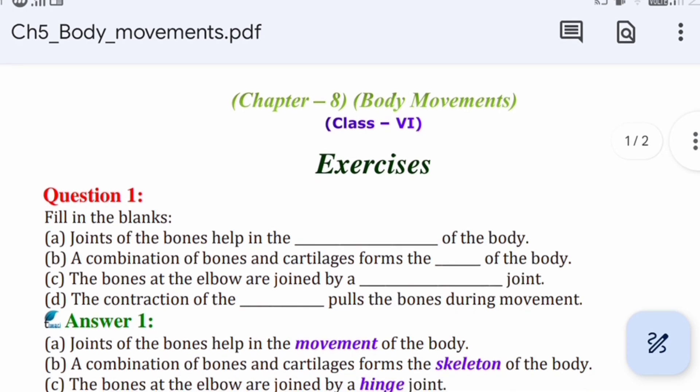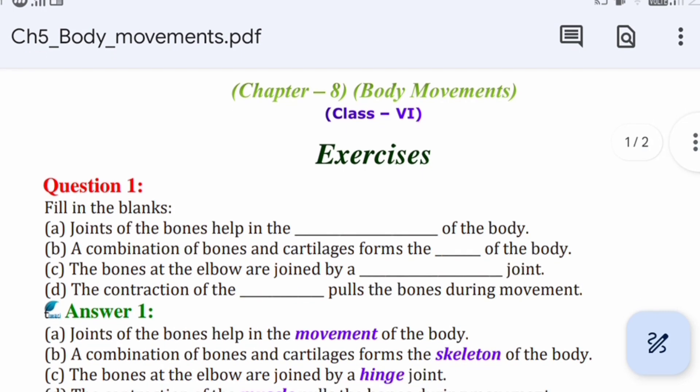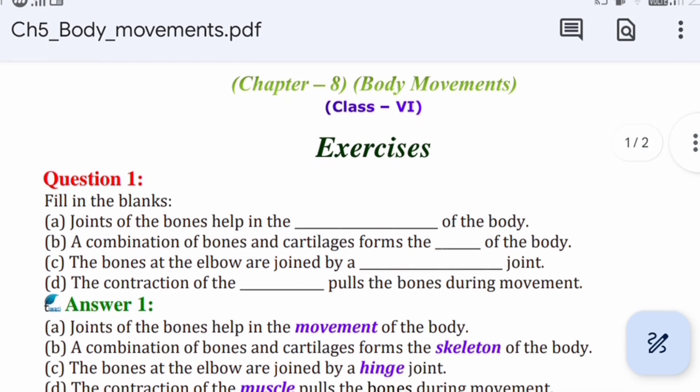Bones at the elbow are joined by hinge joint. (d) The contraction of the blank pulls the bones during movement. The answer is muscle. Contraction of muscle pulls the bones during movement.